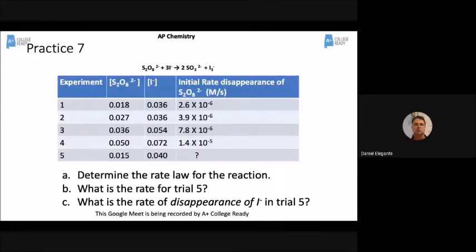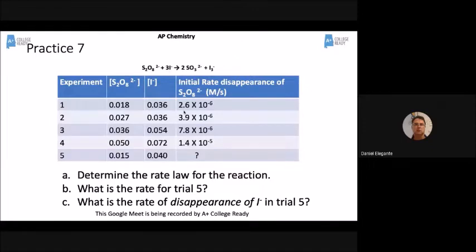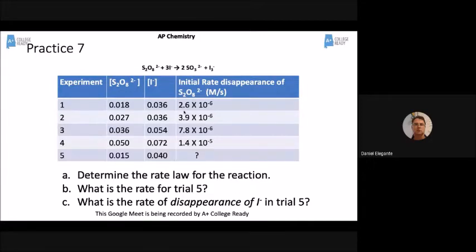Today we're going to look at two different ways to accomplish the same thing. Notice that in this data table right here, there is no aspect of time other than molarity per second. All of our rates of reaction are based on the original starting point. We took the rate of reaction at the very beginning when it's the fastest. We know the reaction gets slower because there are fewer collisions as you use up reactants.